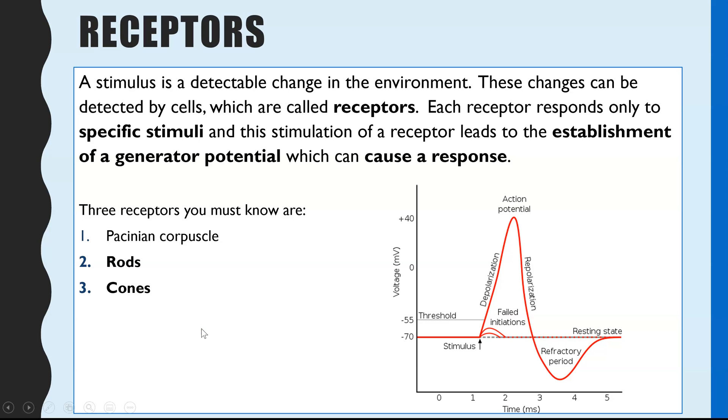So just a little bit about receptors. These are the cells which detect a change in your environment and each receptor responds to a specific stimulus. And once they respond, if the stimulus is big enough, so if the change in the environment was big enough, it will lead to an action potential. And you can watch here my video on action potentials to find out more.